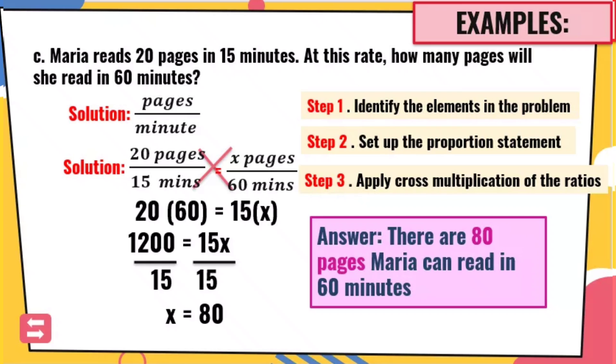So pag nagsosolve kayo ng mga word problems related sa proportion, itong tatlong steps ang tatandaan ninyo. Identify yung elements or yung sinasabi sa problem. Gumawa tayo ng proportion statement or ganito. Yung equal or two ratios na equal. Then, cross multiply. Yun lang naman ang kailangan natin sa proportion. Magko-cross multiply lang tayo para malaman natin yung X. So dalawa lang palagi ang operation na involved dito. Times and divide. So tandaan iyan.